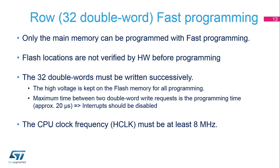A fast programming mode allows you to program 32 double words faster than in standard programming mode. Only the main memory can be programmed in fast programming mode. The flash address location contents are not verified by hardware before programming in fast mode. The 32 double words must be written successively, and the high voltage is kept on the flash memory for all programming. The maximum time between two double word write requests is approximately 20 microseconds. Consequently, interrupts should be disabled to ensure that the 20 microseconds between the two word write requests is not exceeded.